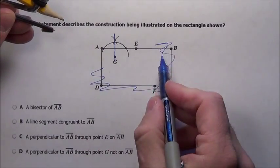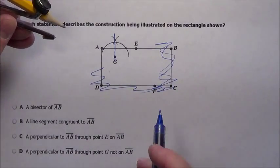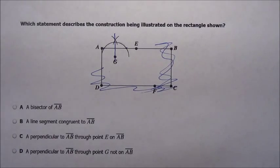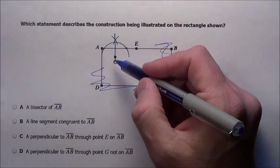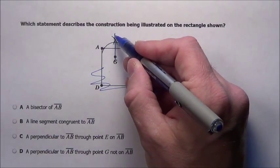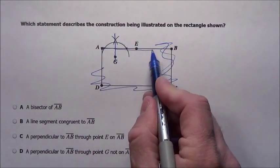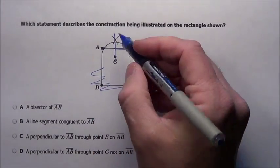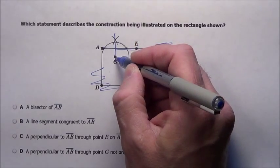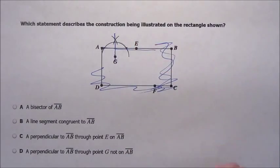The rest of this rectangle is just there to confuse you, there's no real part. So we're trying to draw, it looks to me, we've tried to draw this perpendicular line through this AE or AB, and through this point G which was not on the line itself.